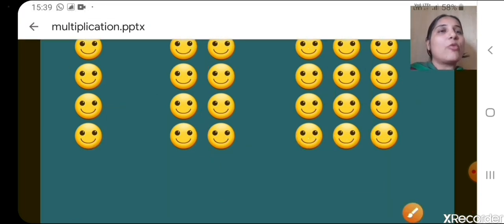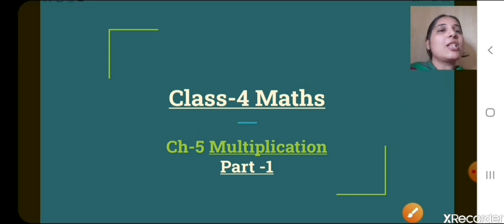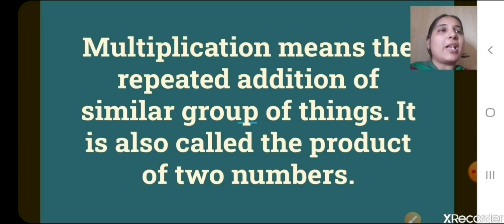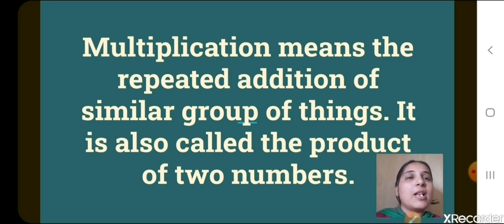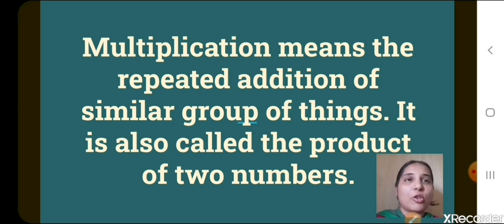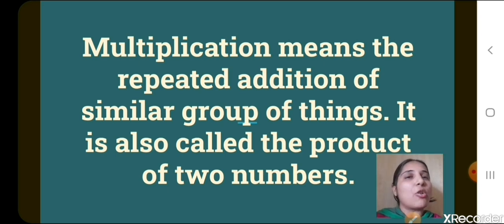So children, today we are going to discuss chapter number 5, that is multiplication. So what is multiplication? Multiplication means the repeated addition of a similar group of things. It is also called the product of 2 numbers. What is multiplication? It is repeated addition of a similar group of things.